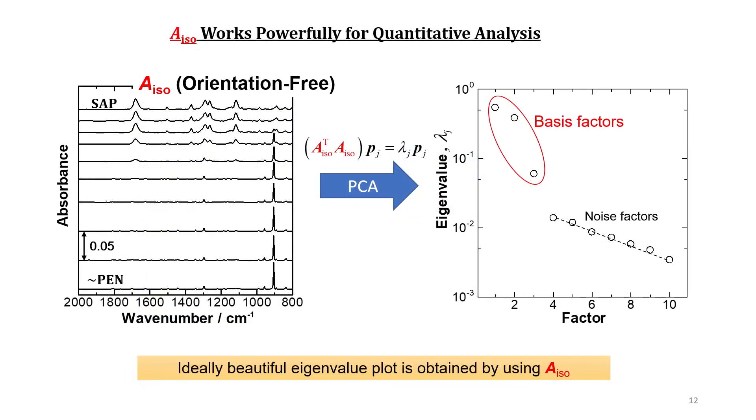The number of constituents involved in this film is analyzed by principal component analysis, PCA, on the isotropic spectra. An ideally beautiful eigenvalue plot is obtained by using the A_iso spectra, which is a great benefit of using MAIRS. The eigenvalue plot apparently implies that three components constitute the basis factors.